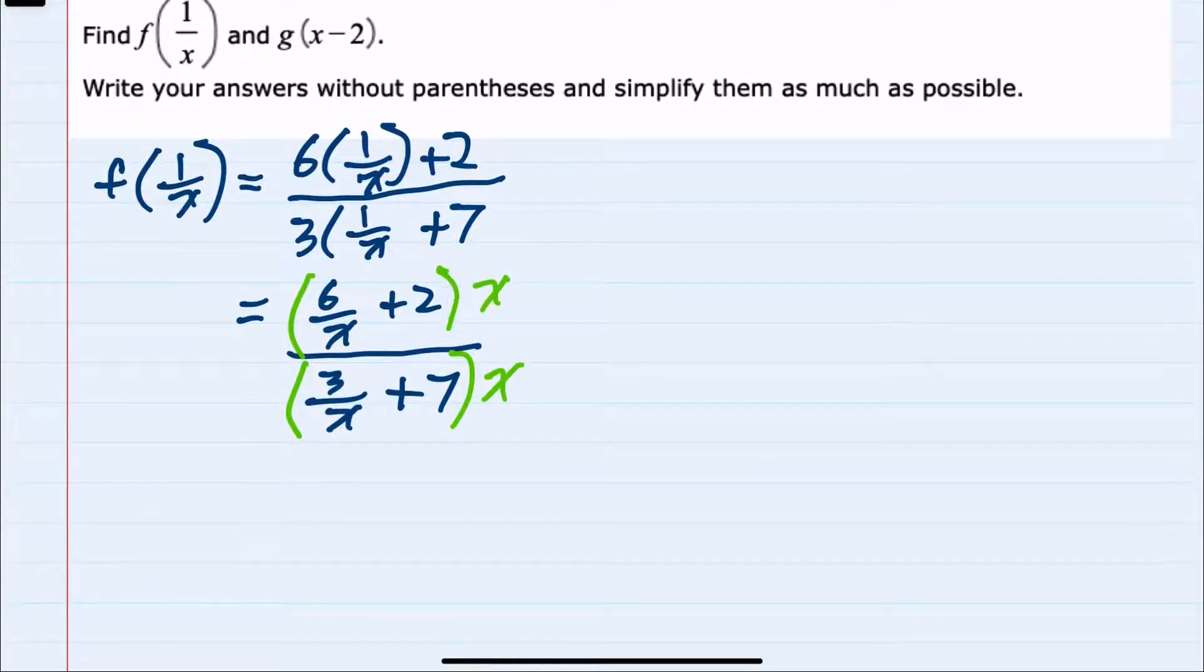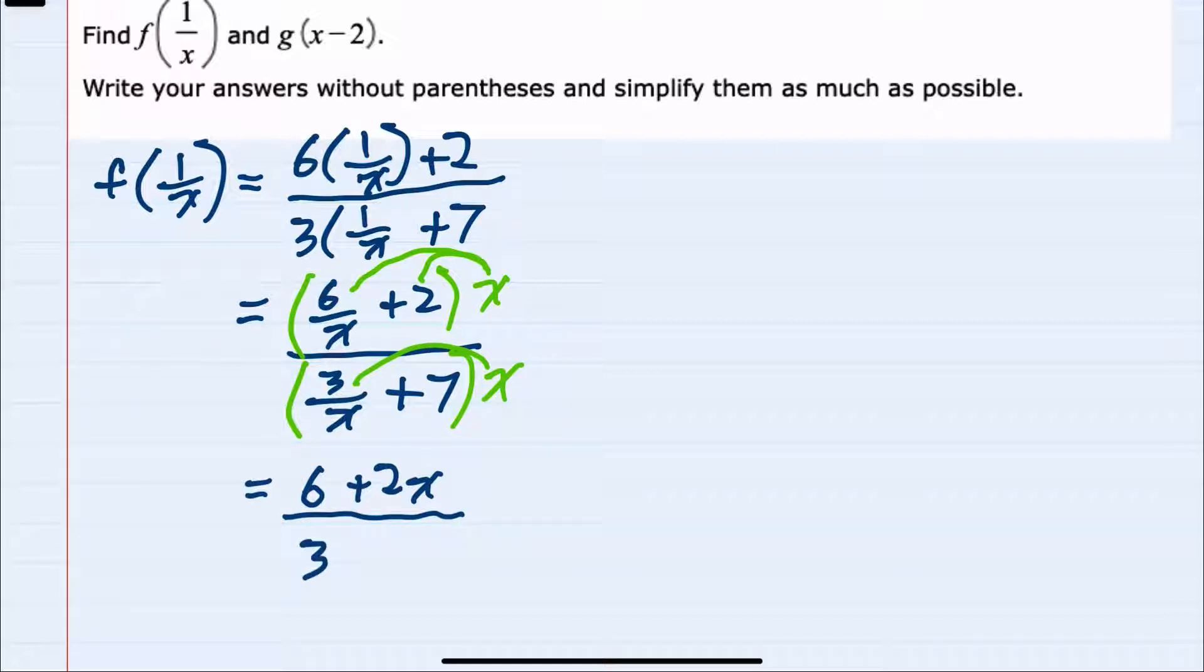And when I distribute, multiplying the x times 6 over x, the x's would cancel, because I would have 1 in the numerator and 1 in the denominator, so that would just be 6. Multiplying the 2 by x would give me a 2x. And then in the denominator, when I multiply the 3 over x times x, again the x's cancel, leaving me with just the 3, and then multiplying the x times 7 would give me a 7x. So we have simplified this as much as possible, and even removed the complex fraction.